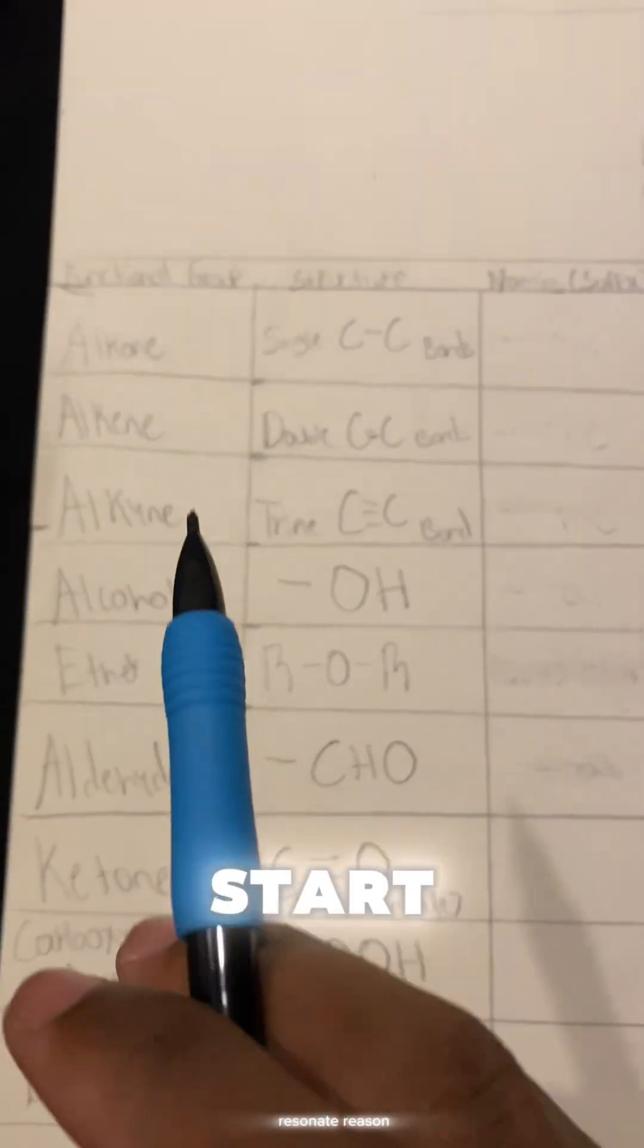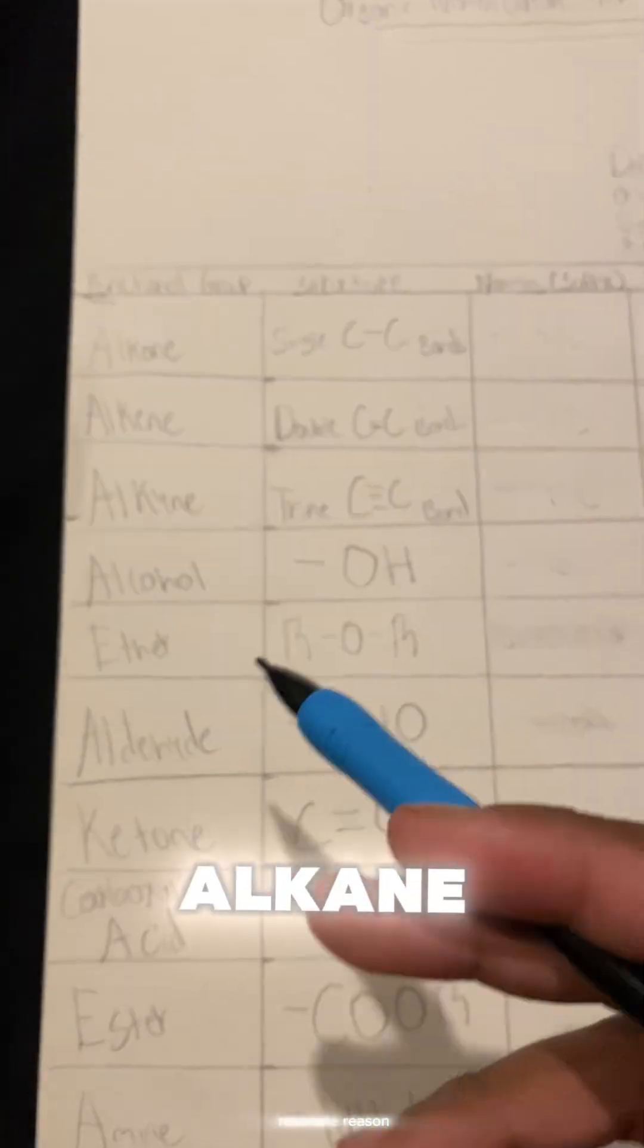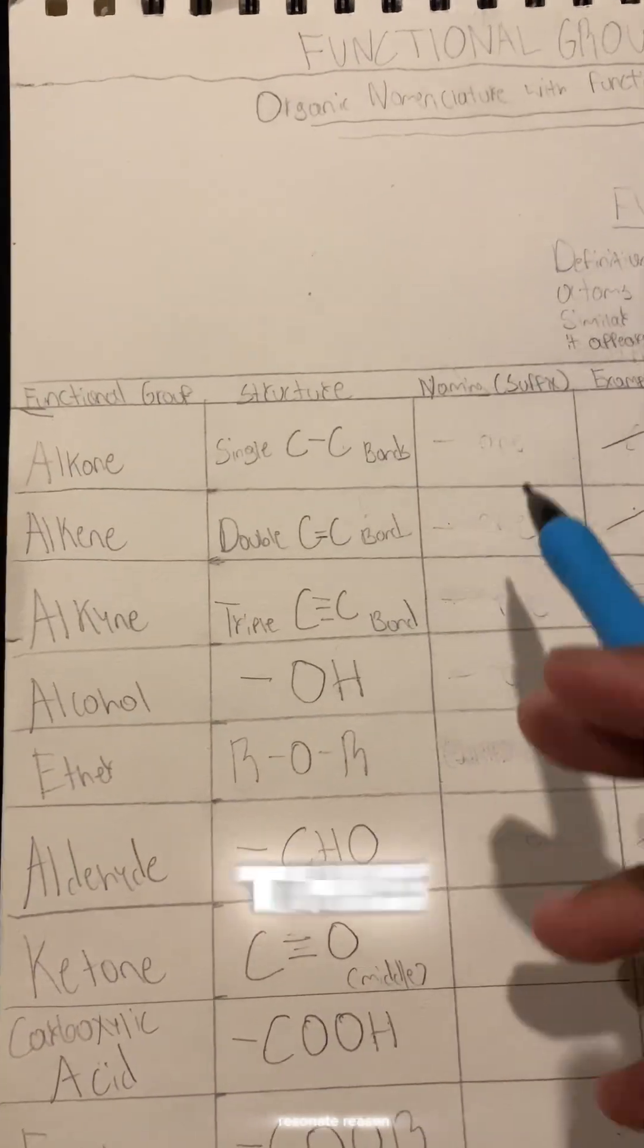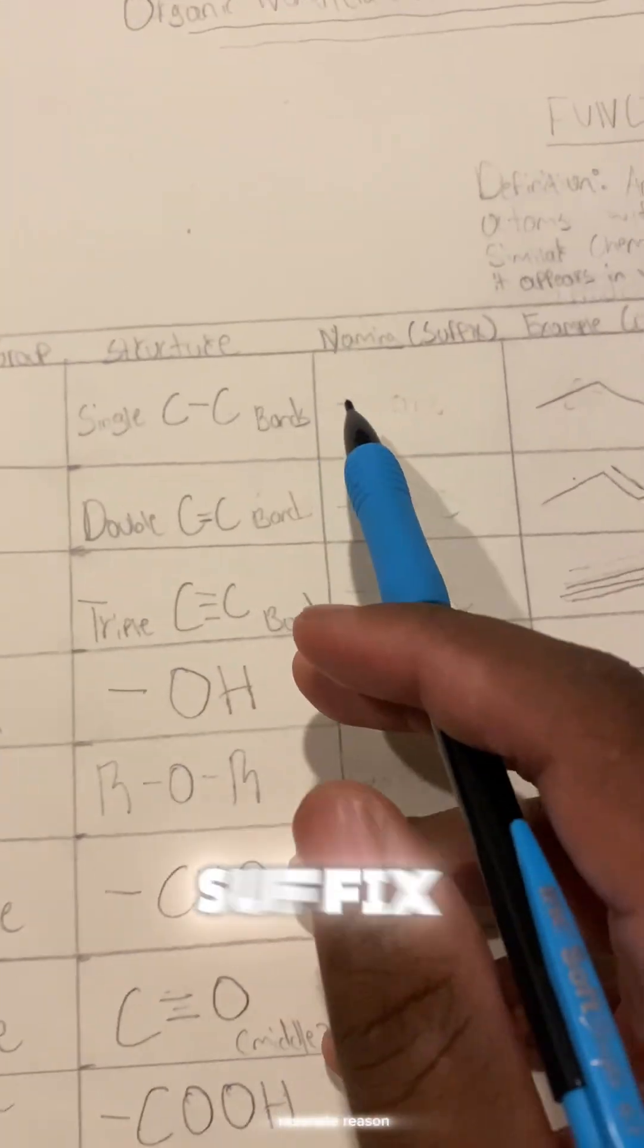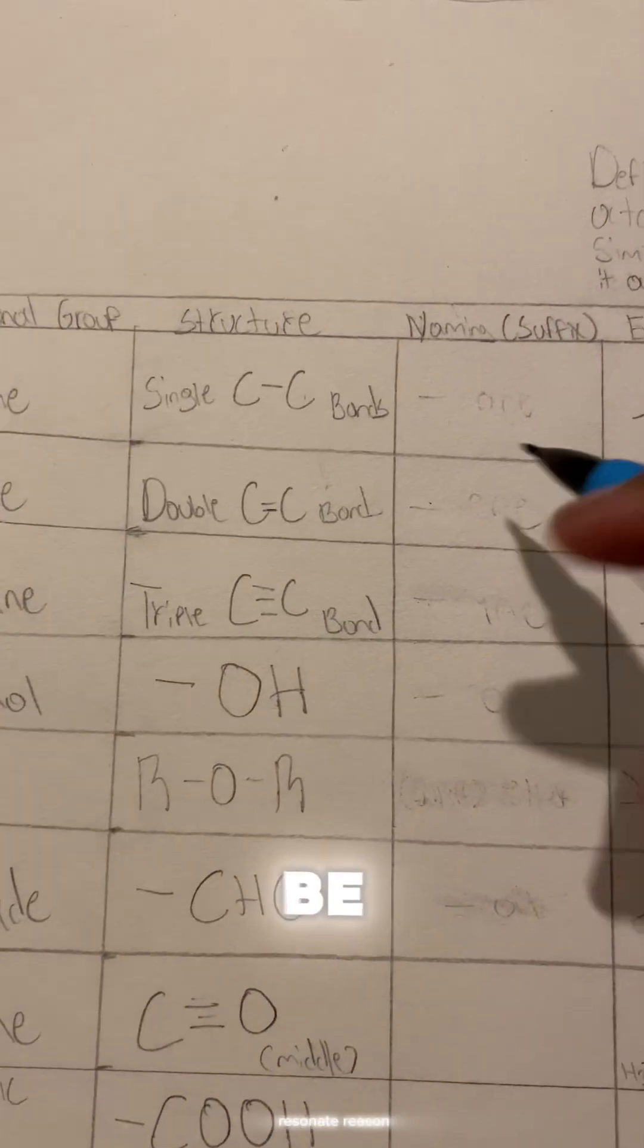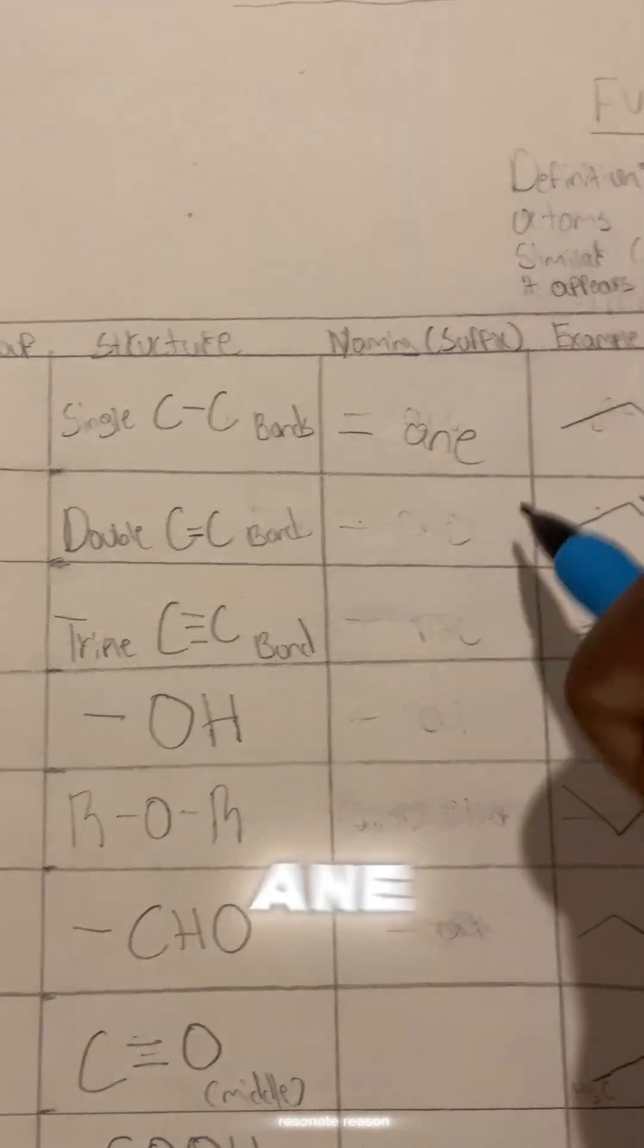First, we're going to start off with an alkane. An alkane is just a single carbon-carbon bond, and that's what we worked with the other day. The suffix for the name of an alkane is just 'ane', and this is an example compound which we're about to do.